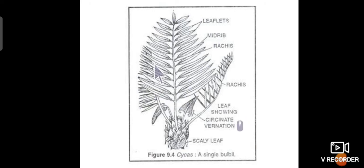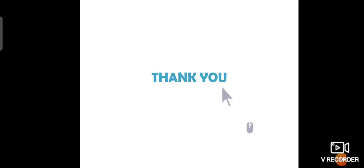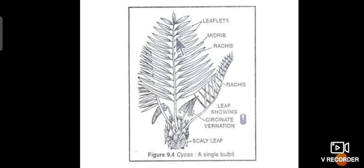The foliage leaves are very large, measuring about one to three meters in size, and are pinnately compound. The leaflets — also known as pinnae — are arranged in pairs on both sides of the rachis, and they are photosynthetic in function. The number of leaflets present in a leaf varies from species to species and also depends on the age and size of the individual plant.